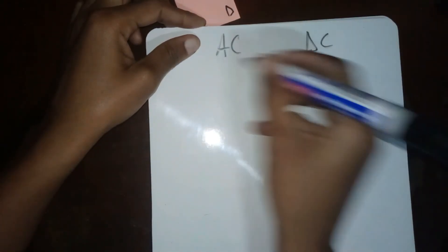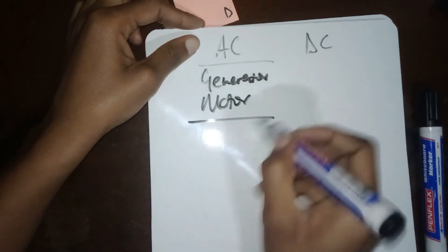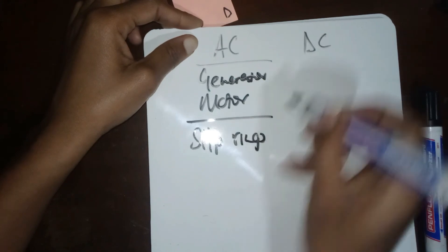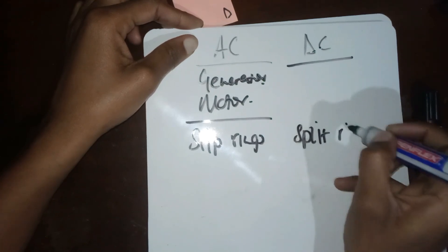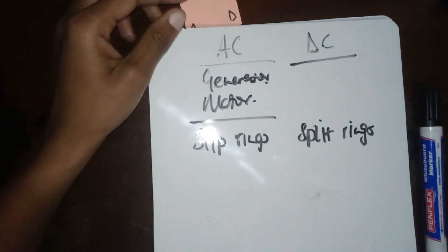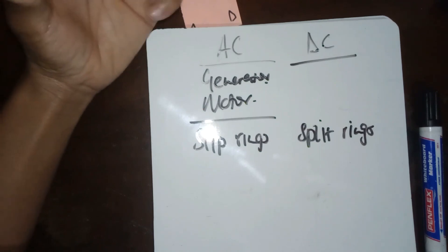Another distinction we can make is with respect to AC and DC. For both AC generators and AC motors, we use slip rings, whereas DC generators and DC motors use split rings. I hope that made sense. In the next lesson we'll talk a little more about alternating current as well as RMS values, which I'm sure you've dealt with at some point during the year.